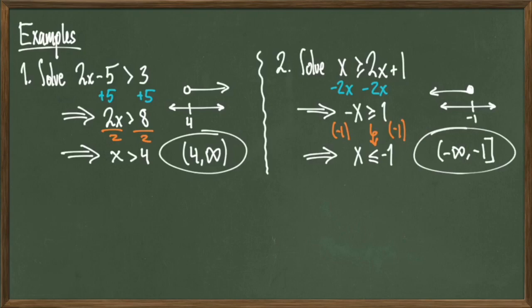So both of these examples use the same techniques as with a linear equation. I just have this extra step of flipping my inequality should I multiply or divide by a negative number. Again, you only have to do this with multiplication or division, so if I add or subtract negative numbers, then I don't have to flip.